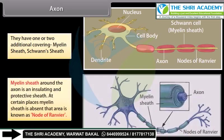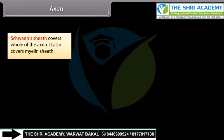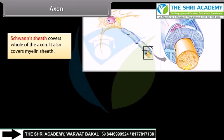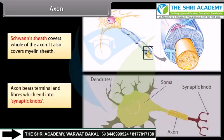The myelin sheath around the axon is an insulating and protective sheath. At certain places, the myelin sheath is absent, and that area is known as the node of Ranvier. The Schwann sheath covers the whole of the axon and also covers the myelin sheath. The axon bears terminal end fibers which end into synaptic knobs.